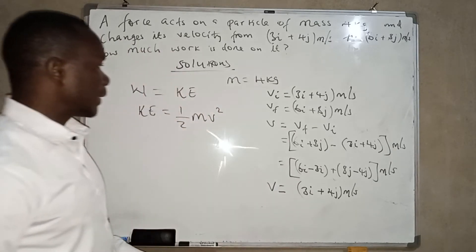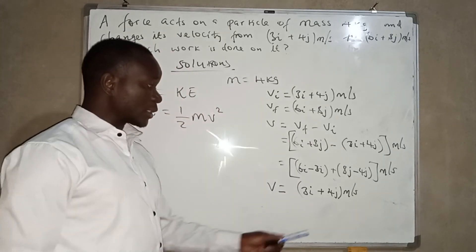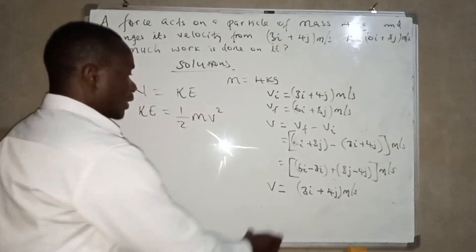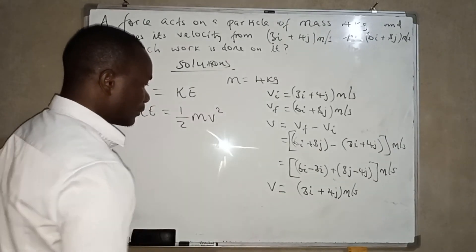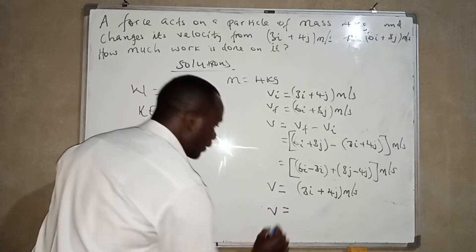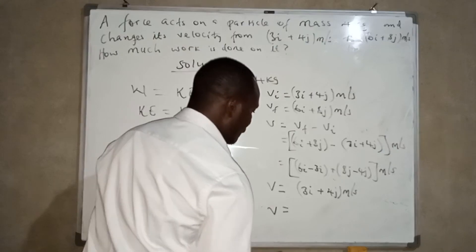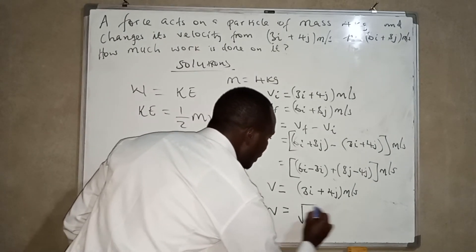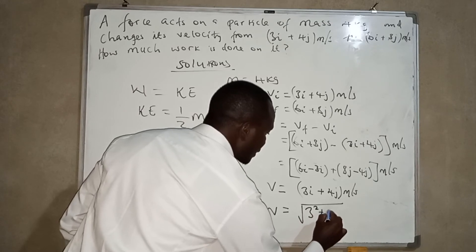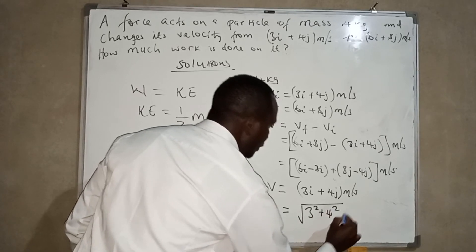This is velocity. This is velocity in terms of a mixture, in terms of x and y components. So the magnitude of this is given by v, for the magnitude, we have the square root of 3 squared plus 4 squared.